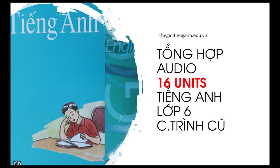Unit 4: Big or Small. Page 39. Section A: Where is your school? Listen and repeat. This is Pham. This is his school. Pham's school is small. It is in the country. This is Thu. This is her school. Thu's school is big. It is in the city. Pham's school is in the country. It is small. There are eight classrooms. There are four hundred students in the school. Thu's school is in the city. It is big. There are twenty classrooms. There are nine hundred students in the school.